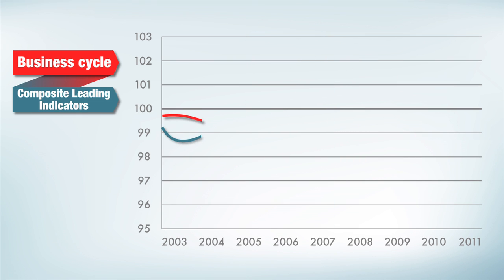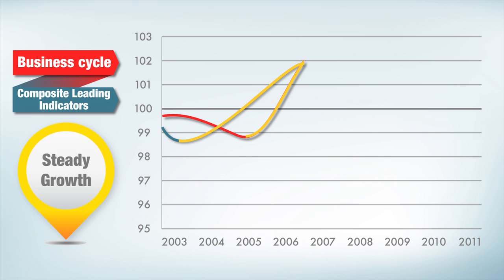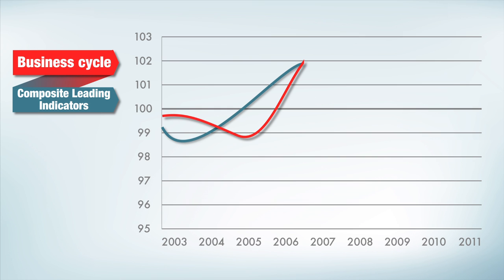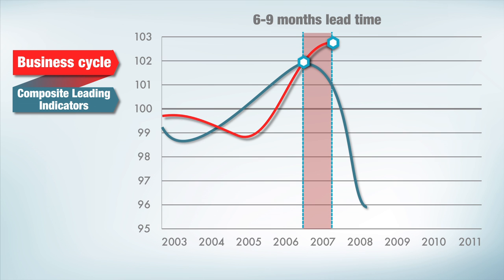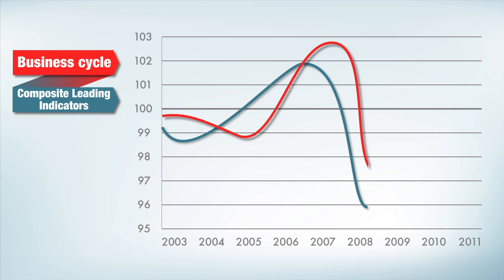When both the business cycle indicator and the CLI are increasing, this indicates steady growth above long-term trends. Later, the CLI forms a peak, indicating that economic growth will soon fall below its long-term potential. At that very moment, none of this is observable in the business cycle indicator, which is still rising. It's only six to nine months later that the business cycle follows the path indicated earlier by the CLI, and indeed, economic growth falls short of its long-term potential.